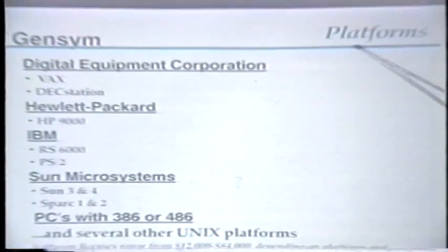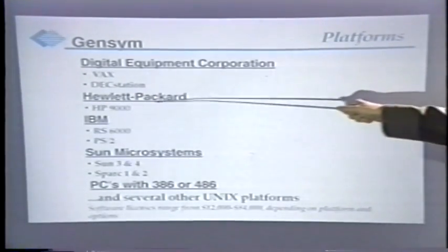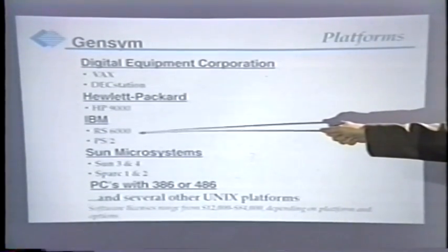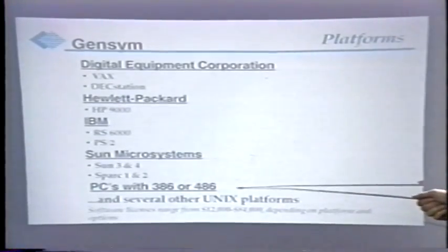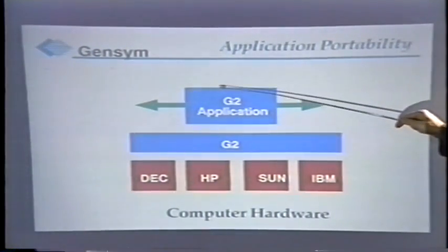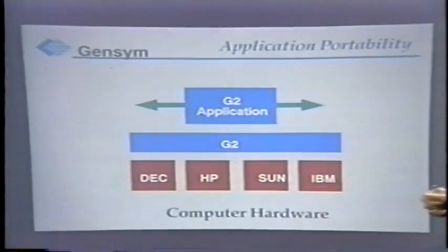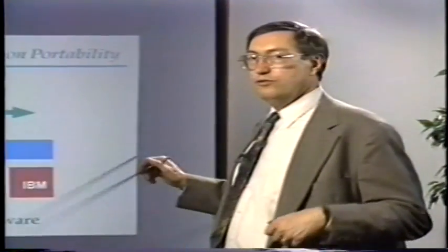The platforms G2 is offered on include Digital Equipment Corporation VAX and DEC Station and soon the Alpha line, Hewlett Packard 9000 product line, IBM RS6000 and PS2 later this year, Sun Microsystems Sun and SPARC versions, and a number of PCs including the Windows environment for 386/486. Applications developed in G2 are portable across platforms, so engineers can develop on one platform and run on another — very convenient for system integrators providing layered solutions on top of G2.